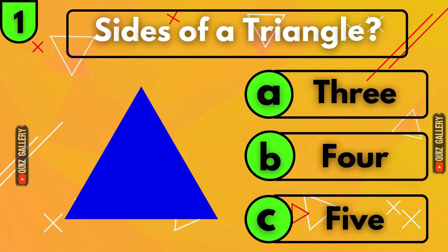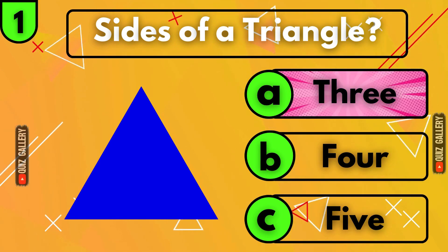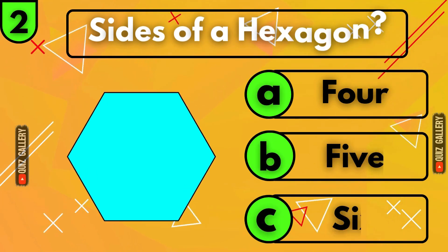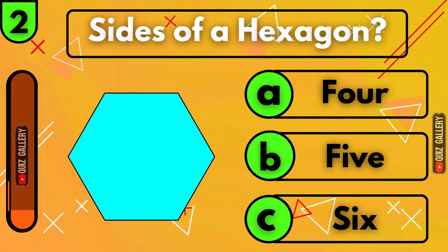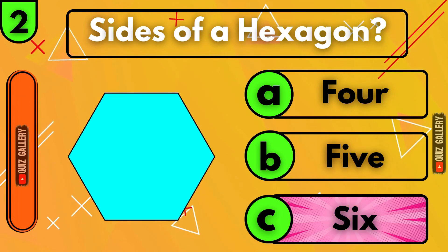How many sides does a triangle have? Three! How many sides does a hexagon have? Six sides!